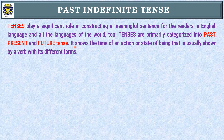Tense shows the time of an action — a state of being that is usually shown by a verb with its different forms. Different forms mean, for example, first form, second form, third form, and fourth form. Now let's discuss past indefinite tense.